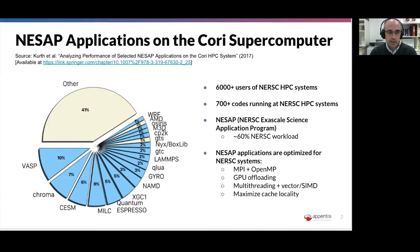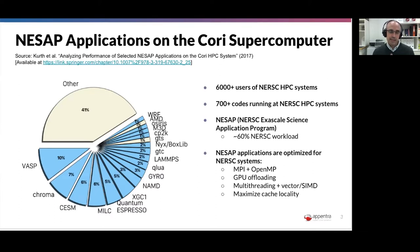We are interested in looking at these applications and how they are coded, how they exploit parallelism. We found different combinations: MPI plus OpenMP is a widely used case, GPU offloading, multi-threading executing different threads on multi-core CPUs, and each of these threads doing single-thread execution accelerated using SIMD or vector instructions available in the processor.